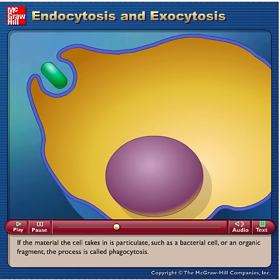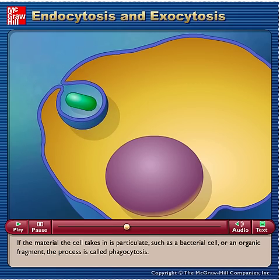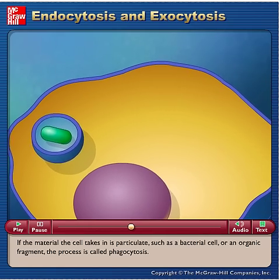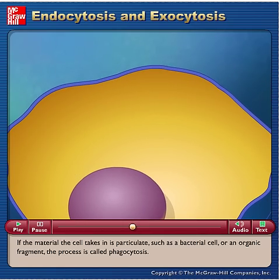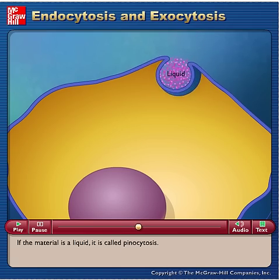If the material the cell takes in is particulate, such as a bacterial cell or an organic fragment, the process is called phagocytosis. If the material is a liquid, it is called pinocytosis.